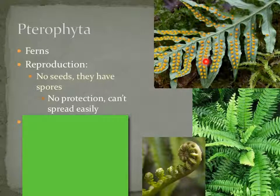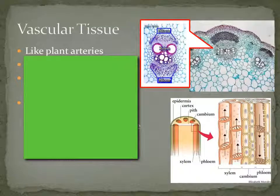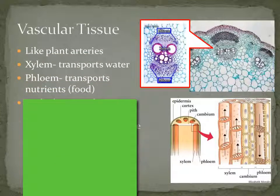Unlike the bryophytes, ferns do have vascular tissue — they have xylem and phloem. Xylem and phloem are types of vascular tissue found in plants, and they're basically like the plant's arteries, just like your arteries and veins are called your vascular tissue. So they transport stuff around the body of the plant. There are two types: xylem, which transports water, and phloem, which transports nutrients.